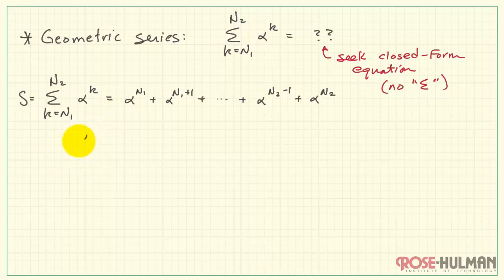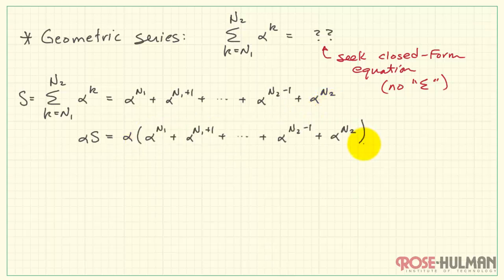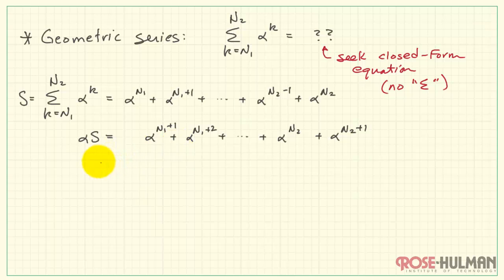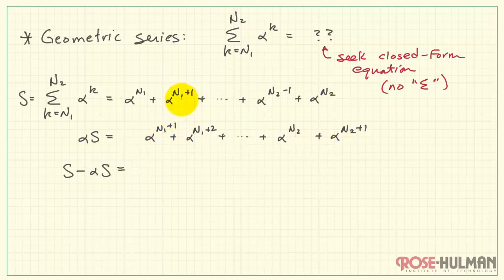Now I'd like to form the product of alpha and this sum S. Let me put in the expansion right here. I can distribute alpha across this sum, and we'll see that this has the effect of raising the power in each term by the value 1. Now something interesting happens when we take the original sum and subtract this new version, alpha times S — we notice that almost all of the terms are exactly the same.